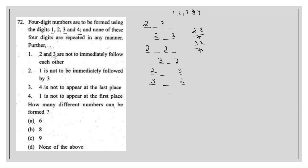These will be further filtered as we read the other instructions. The next condition is: 1 is not to be immediately followed by 3, which means 3 should not come right after 1 — there should be at least one digit between 1 and 3. So in cases where 1 would precede 3 directly, 1 cannot appear there, and we're left with 4 in that position.